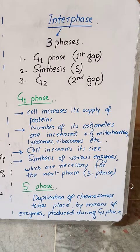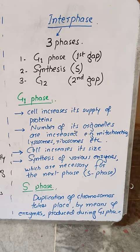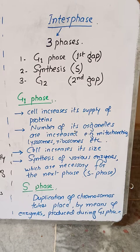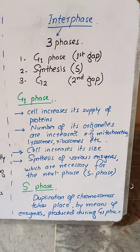Welcome to Ali's Biology. In the previous video we have already discussed about interphase a little bit. Interphase is the longer phase of the cell cycle and it prepares the cell for cell division. It is composed of three main phases: G1 phase, also called the first gap; S phase; and G2 phase, also called the second gap.